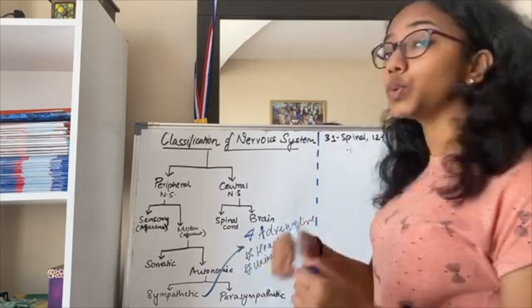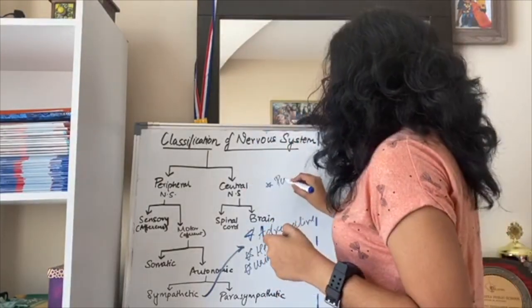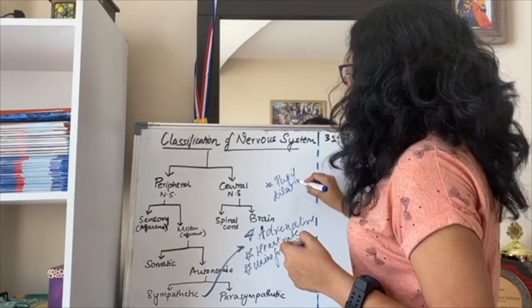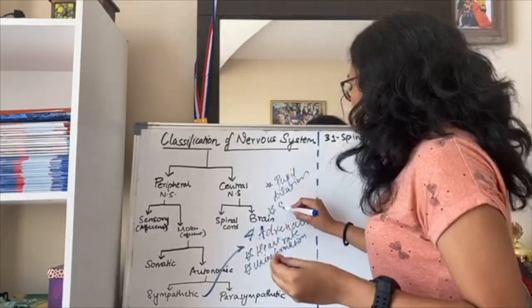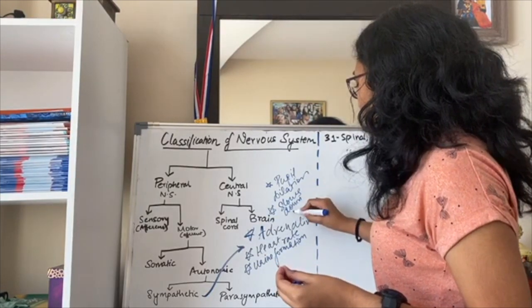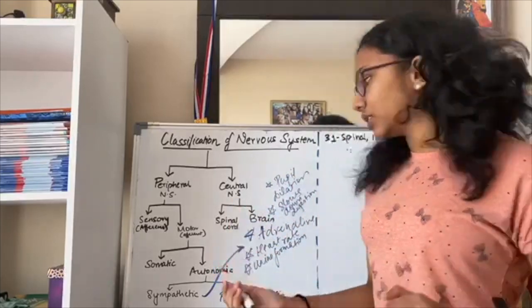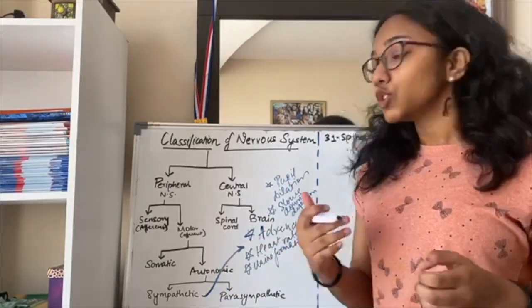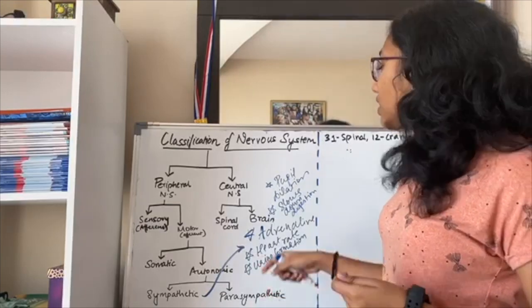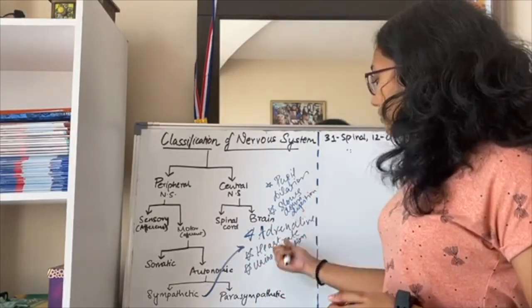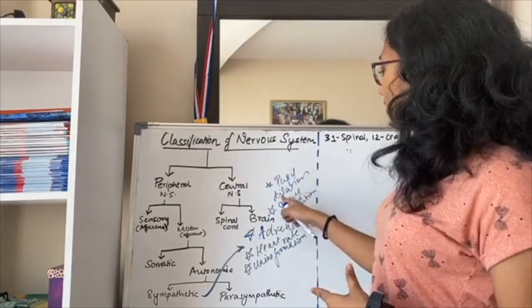The sympathetic nervous system also causes dilation of the pupil, not constriction, and it slows down digestion and the secretion of digestive and salivary enzymes. The parasympathetic nervous system is completely opposite: it reduces adrenaline secretion, reduces heart rate, reduces urine formation, increases digestion and salivary enzyme secretion, and constricts the pupil.